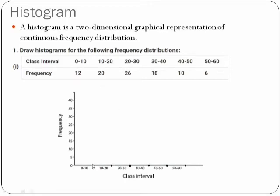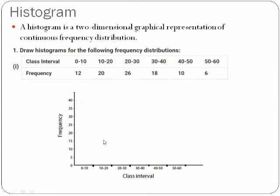First, draw the x-axis and mark the class intervals on it. From 0 to 10 is the first class interval, then 10 to 20, 20 to 30, 30 to 40, 40 to 50, and 50 to 60. On the y-axis, you plot the frequency: 0, 5, 10, 15, 20, 25, 30, 35, 40. Going up to 40 is enough because the maximum frequency here is 26. Now pause the video and draw the axes with the markings.